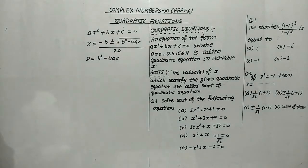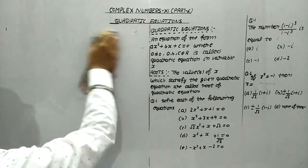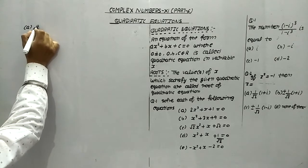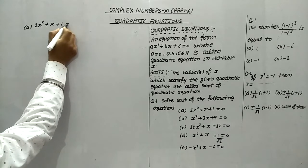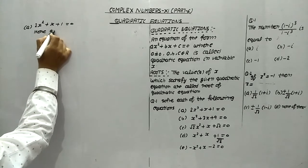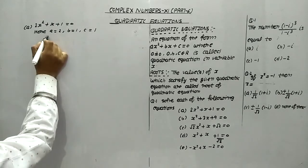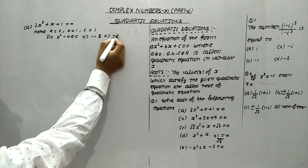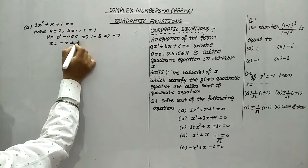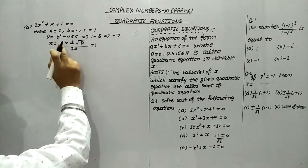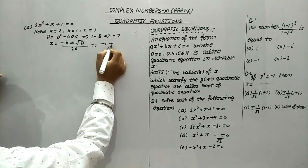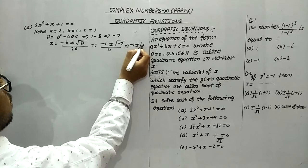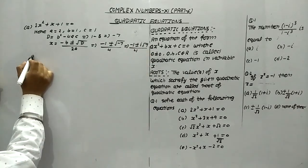Let's start with question number one, part (a): 2x² + x + 1 = 0. Here a = 2, b = 1, and c = 1. First, calculate D: b² − 4ac = 1 − 8 = −7. Then x = (−b ± √D) / 2a = (−1 ± √(−7)) / 4. Since √(−1) = i, this gives x = (−1 ± i√7) / 4. And this is the answer.